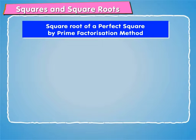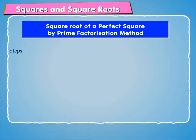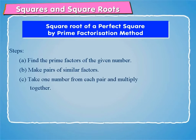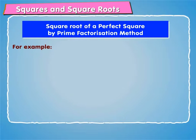We will first learn how to find the square root of a perfect square by prime factorization method. This method is most suitable when the given number is a small number. In this method, we adopt the following steps: (a) Find the prime factors of the given number, (b) make pairs of similar factors, (c) take one number from each pair and multiply together. Let us understand this by means of an example.